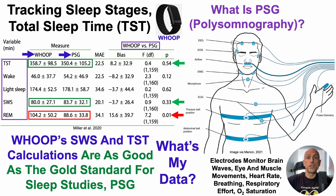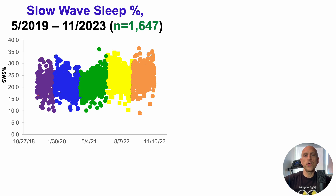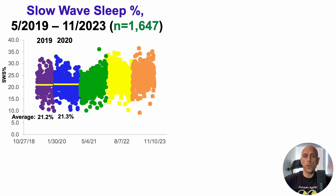With that in mind, here's my personal data. I've been wearing Whoop for many years, so I have data for slow wave sleep and total sleep time to calculate slow wave sleep percentage and see if I've declined during aging. We're looking at slow wave sleep percentage from May 2019 through early November 2023 — more than 1,600 days of data, where each dot represents a single day's worth of data.